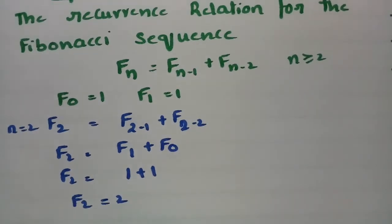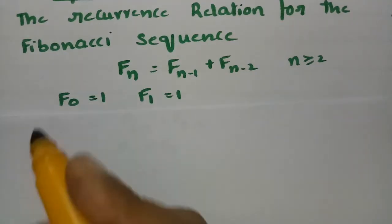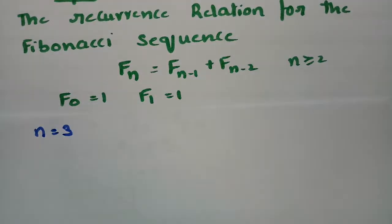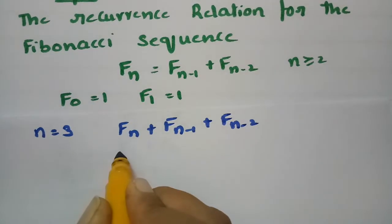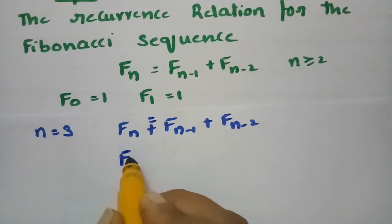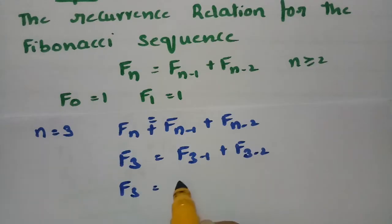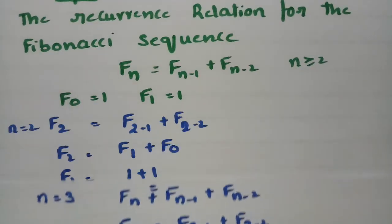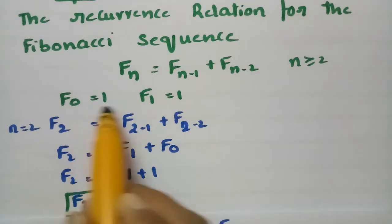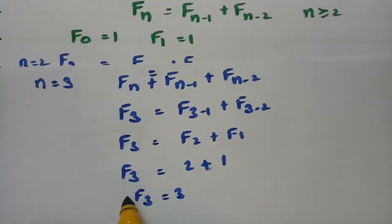After getting F2 = 2, let's compute n = 3. Substituting n = 3 into Fₙ = Fₙ₋₁ + Fₙ₋₂ gives F3 = F2 + F1. We have F2 = 2 and F1 = 1, therefore F3 = 3.